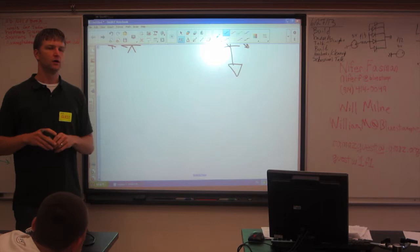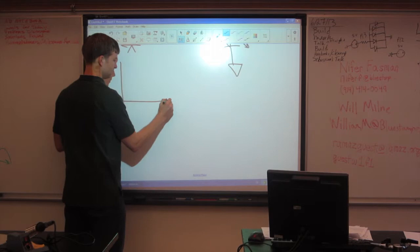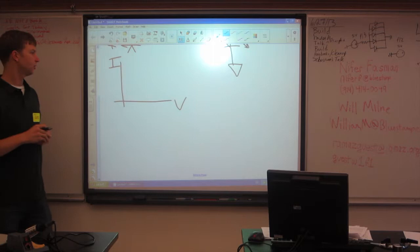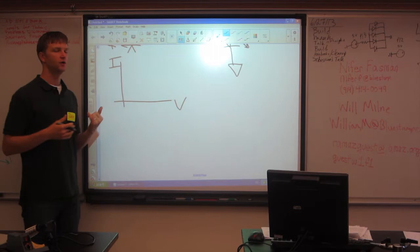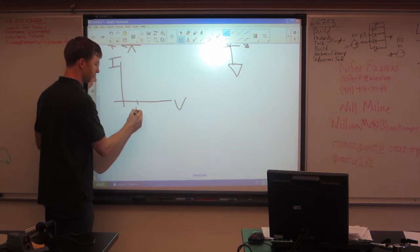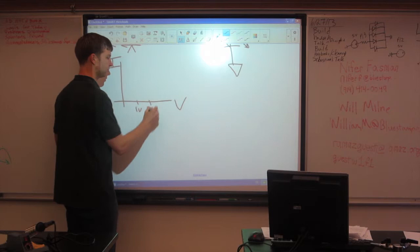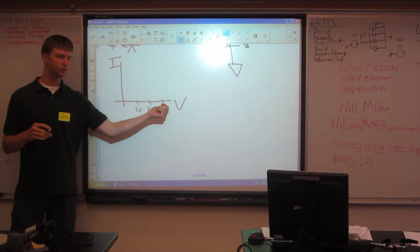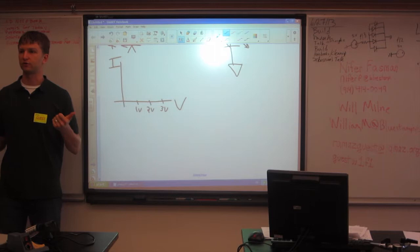So what I'm going to talk about right now is called an IV curve. An IV curve, this is voltage, and this is current. So for any component, you can make an IV curve. Some of them doesn't make as much sense as others, but for components like LEDs and resistors, you can make an IV curve. And you can describe, if I give it one volt, how much current will go through it. If I give it two volts, how much current will go through it, and if I give it three volts, how much current will go through it.